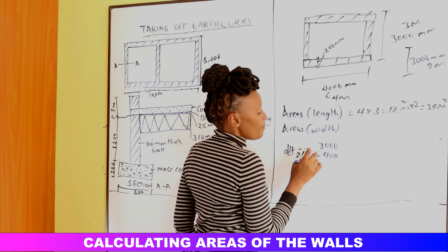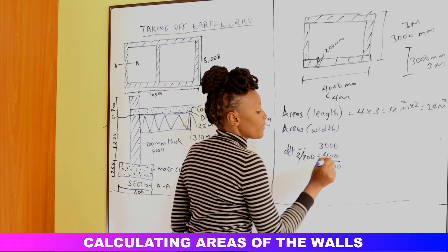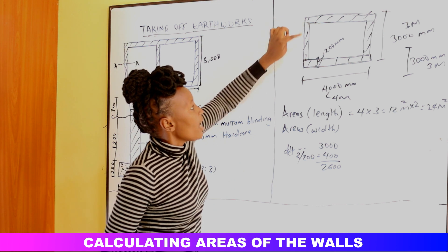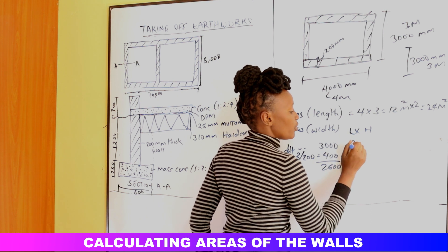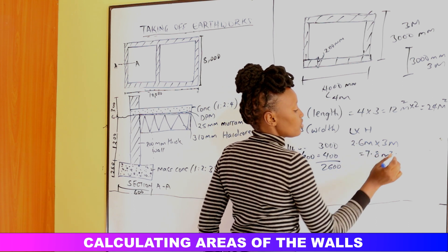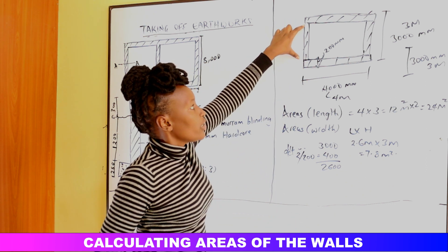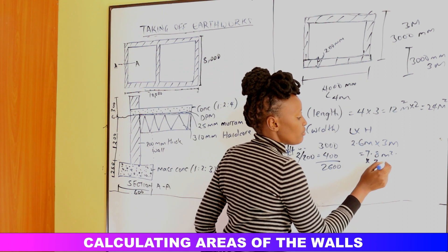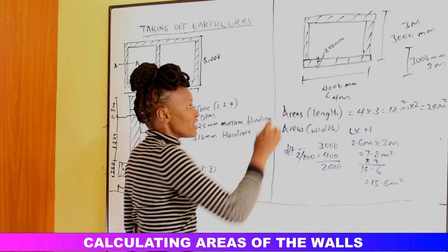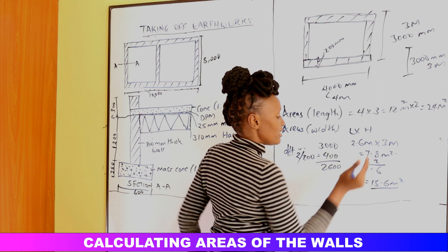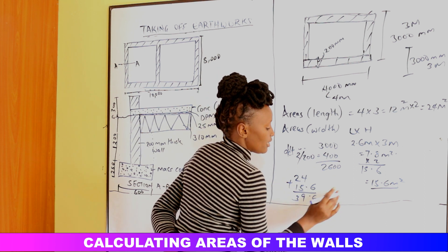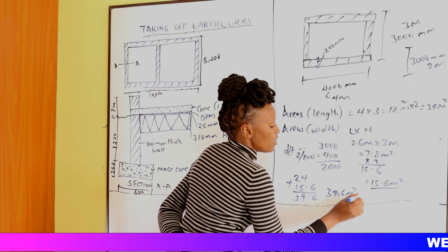So 3000 minus 400 equals 2600 mm — that is the length of each width wall. The area is 2.6 meters times 3 meters height, giving 7.8 square meters per wall. There are two width walls, so 7.8 times 2 equals 15.6 square meters. The total wall area is 24 plus 15.6, giving 39.6 square meters.